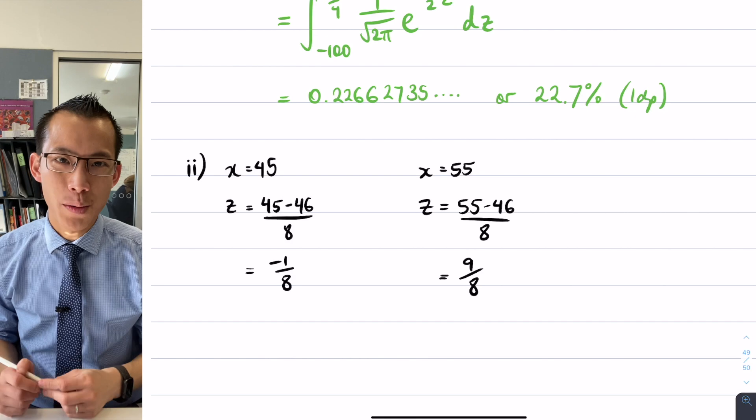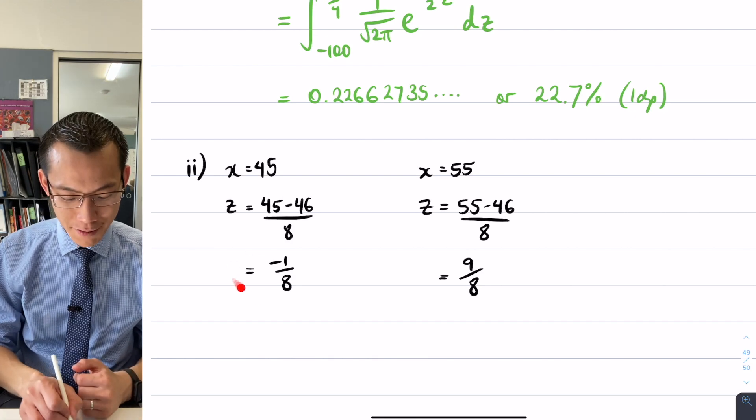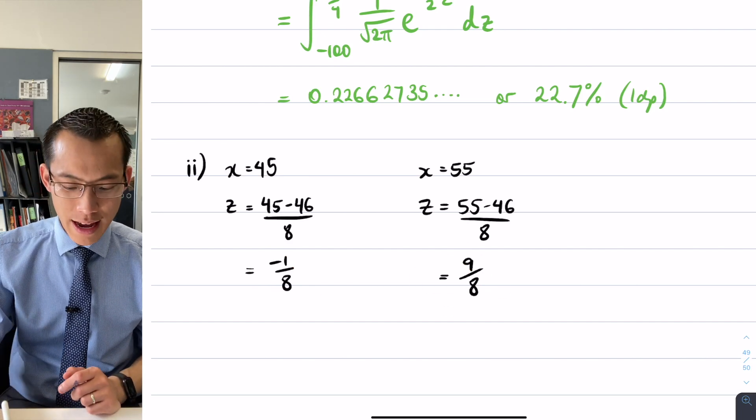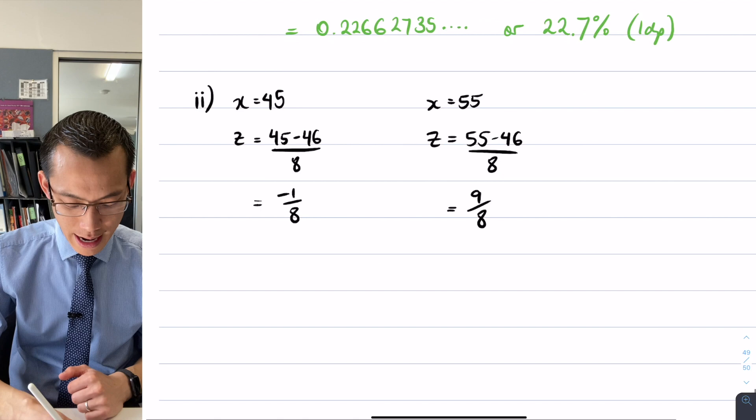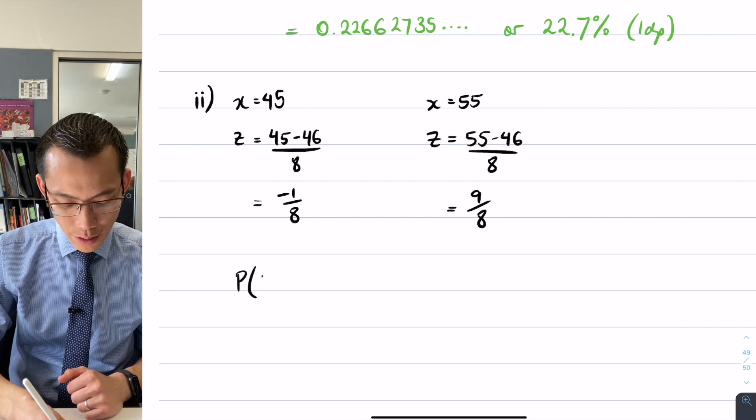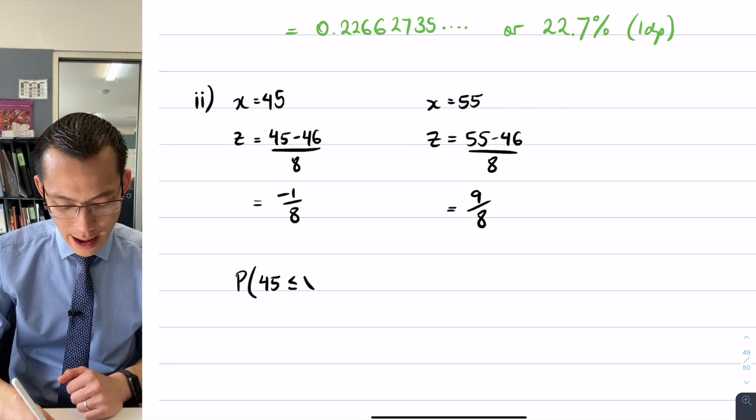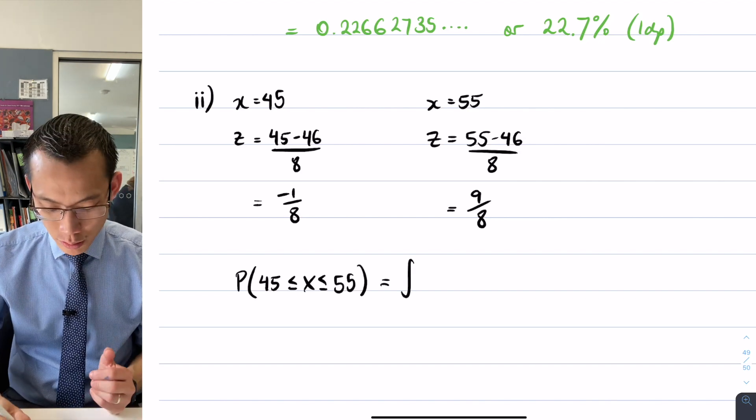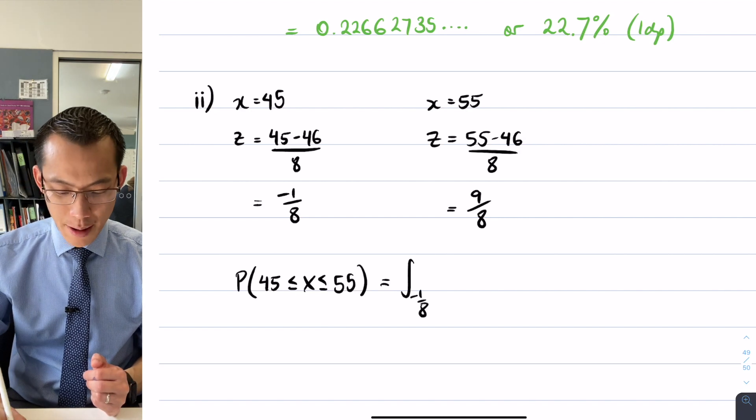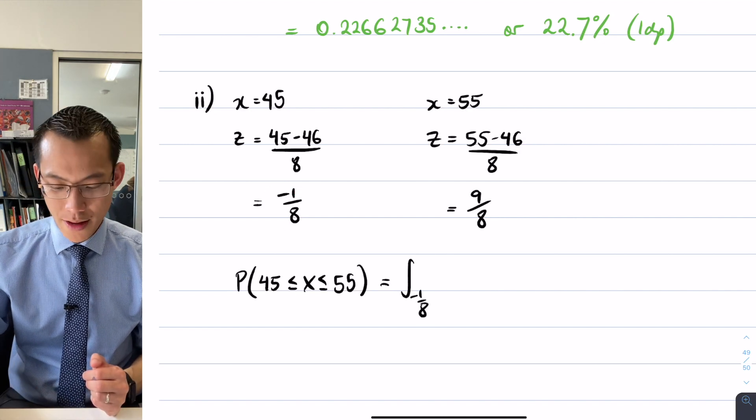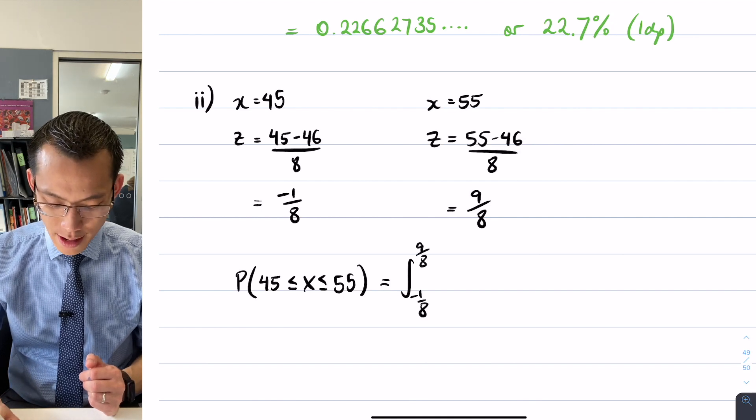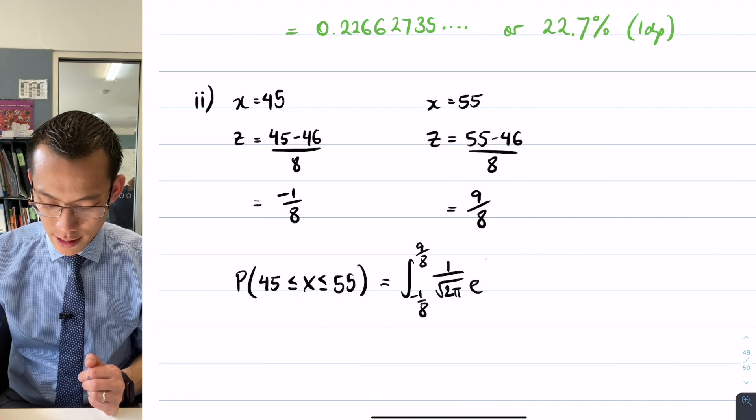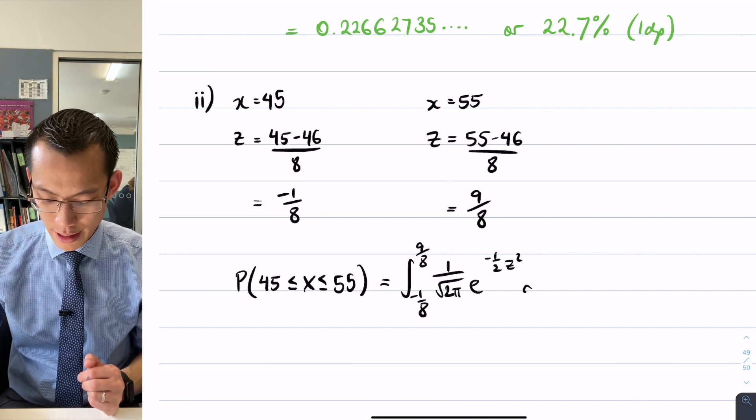So unlike in the first part that we were just looking at, here I have nice numerical lower boundaries and upper boundaries, and this is what I'm going to substitute into my probability. So I can say that the probability of being between 45 and 55 is going to be exactly equal to this particular integral. I go from my lower one, negative 1 over 8, which I got from here, and then I go to my upper one, 9 over 8, of my probability density function: 1 over root 2π e to the negative 1 half z squared dz.